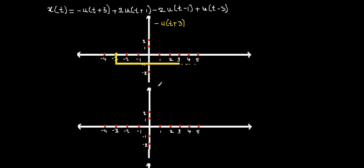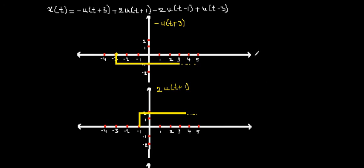The next task is to sketch 2u(t+1). Here u(t+1) means the step signal has been shifted to the left by 1, and its amplitude has been scaled by a factor of 2. The signal starts at t = -1 with an amplitude of 2, and continues with this value till infinity. This is how 2u(t+1) looks.